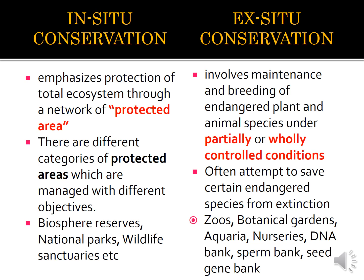There are different categories of in situ areas managed with different objectives, such as national parks, wildlife sanctuaries, and so on. For ex situ conservation, it is actually done outside of the area itself — you take the animal or fauna or flora of conservation interest and create a facility for them. Ex situ conservation often attempts to save certain endangered species from extinction. Since human interference is so much, we build facilities for them — for example, zoos, botanical gardens, aquaria like the one in KL, nurseries, sperm banks for threatened animals, and seed or gene banks.